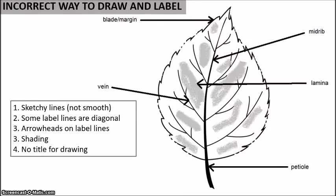Now this is the incorrect way to draw and label your drawings. We see that here are the sketchy lines, so they're not smooth. Label lines are kind of all over the place. So some are diagonal, and they're not even made properly. They're a little bandy. Some are not as straight as they should. There's arrowheads on the label lines, so that is a no-no. Here we have shading. And then there is absolutely no title for the drawing. So these are the don'ts when you are making your drawings.